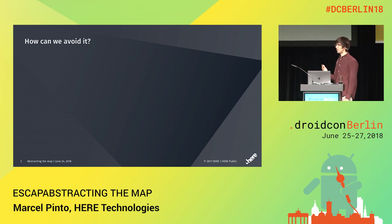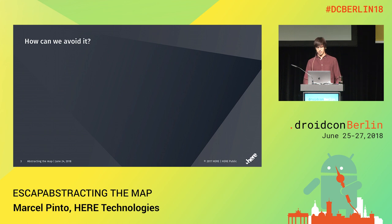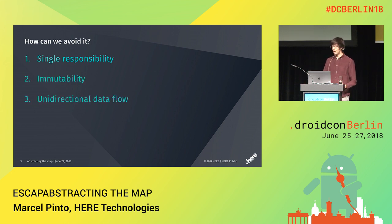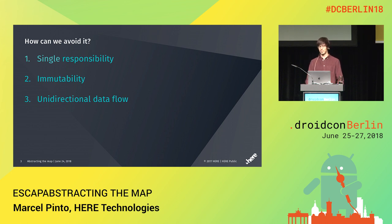I will focus on three principles in this talk: single responsibility, immutability of objects and classes, and unidirectional data flow. To go through these, I will use an example that probably most of you have seen if you have ever worked with maps.